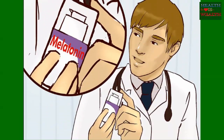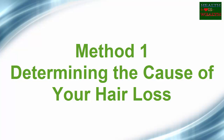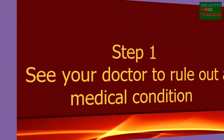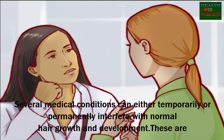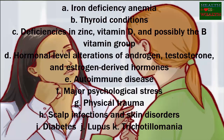Here are three methods on how to treat female hair loss. Method one: determining the cause of your hair loss. Step one — see your doctor to rule out a medical condition. Several medical conditions can either temporarily or permanently interfere with normal hair growth and development. These include: A) iron deficiency anemia, B) thyroid conditions, C) deficiencies in zinc, vitamin D, and possibly the B vitamin group.